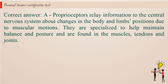Correct answer a. Proprioceptors relay information to the central nervous system about changes in the body and limbs positions due to muscular motions. They are specialized to help maintain balance and posture and are found in the muscles, tendons and joints.